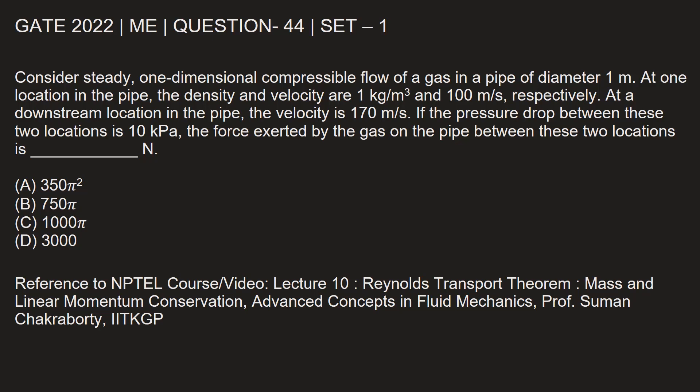Consider steady one-dimensional compressible flow of a gas in a pipe of diameter 1 meter. At one location in the pipe, the density and velocity are 1 kg per meter cube and 100 meter per second respectively. At a downstream location in the pipe, the velocity is 170 meter per second. If the pressure drop between these two locations is 10 kilo Pascal, the force exerted by the gas on the pipe between these two locations is dash Newton.